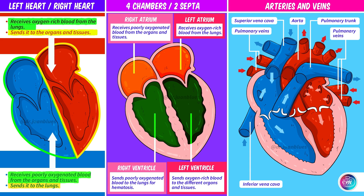The right atrium receives the poorly oxygenated blood from the organs and tissues, and the right ventricle sends this blood to the lungs for gas exchange, known as hematosis. The left atrium receives the oxygen-rich blood which flows from the lungs, and the left ventricle is responsible for sending this blood to the different organs and tissues. There are divisions between the different chambers, called septa. The septum separating the atria is known as the interatrial septum, and the septum separating the ventricles is known as the interventricular septum.